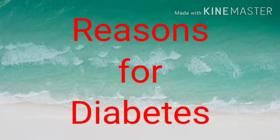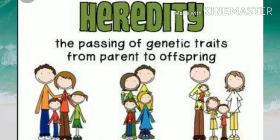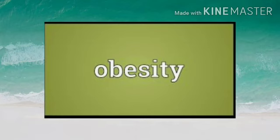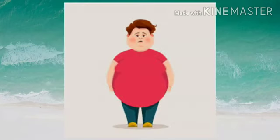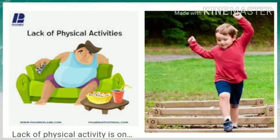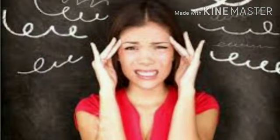The reasons for diabetes are: first, heredity — sometimes diabetes is passed from parents to their offspring. Second, obesity, which means being overweight. Third, lack of physical exercise, meaning not getting enough physical activity. And fourth, mental stress — a feeling of emotional or physical tension.